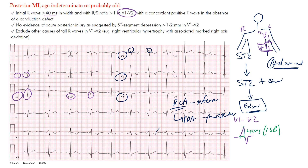Notice in the inferior leads — 2, 3, and aVF — we have these deep Q waves that have formed, which is normally what we want to see with a prior MI. A Q wave is the first negative deflection of a QRS complex. You want to make sure you're seeing Q waves in these leads, and clearly they're forming here in contiguous inferior leads, indicating a prior inferior MI.